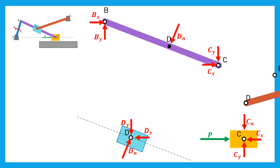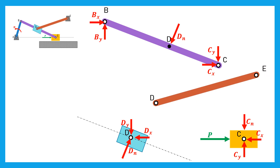Next is the bar DE. This bar exerts two reactions DX and DY on the slider in D; thus the slider will apply on the bar DE similar forces but in opposite direction. The bar DE is connected to the ground using a rotating joint; thus the ground applies two reactions EX and EY.